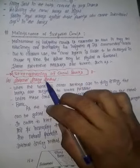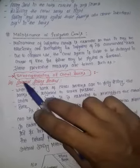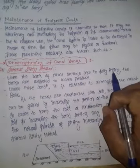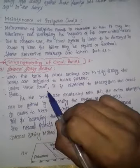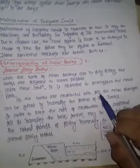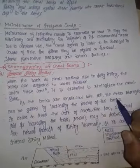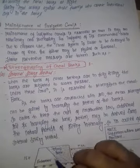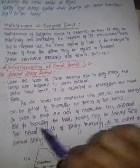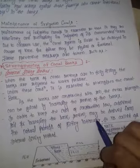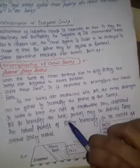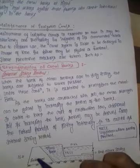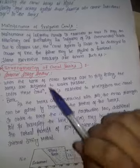One such preventive measure is the strengthening of the canal bank. The first method is the internal silting method. When the banks of the canal section are fully filtering, the banks are subjected to water pressure. Under this condition it is essential to strengthen the canal bank. Since the banks are constructed with soil, extra strength can be gained by increasing the section of the bank. To keep the cost of construction low, additional soil for increasing the bank section may be obtained by the natural process of internal silting.